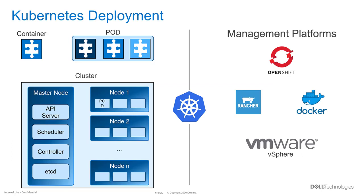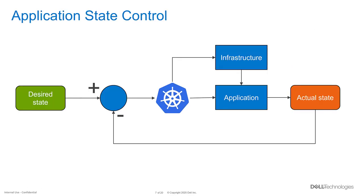Docker is the de facto standard to build and run container images. Kubernetes is the core orchestration platform that has evolved as the de facto choice to deploy containerized applications. You can download vanilla Kubernetes itself, but multiple vendors provide Kubernetes distributions with additional features and functionality to make it easier to get started and operate a Kubernetes environment at enterprise scale.